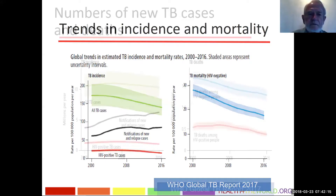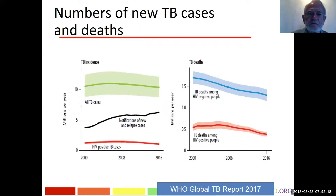TB incidence — shown in the green line — is estimated at about 10 million new cases per year in 2016. There is a notable gap between the black line, which represents notifications of new and relapse cases, and the actual estimated number of cases in 2016. This gap is an important point that will be revisited shortly.